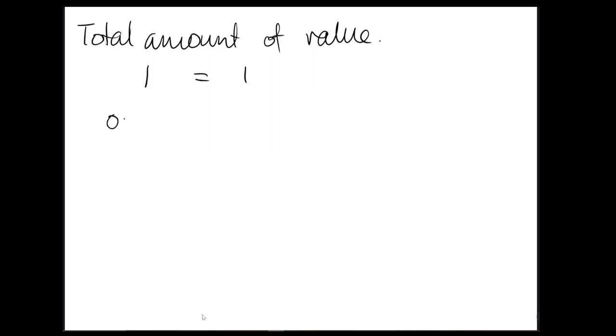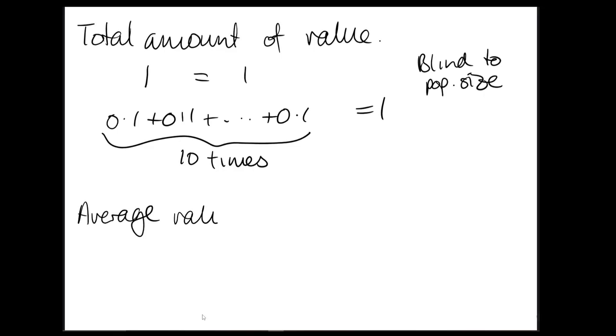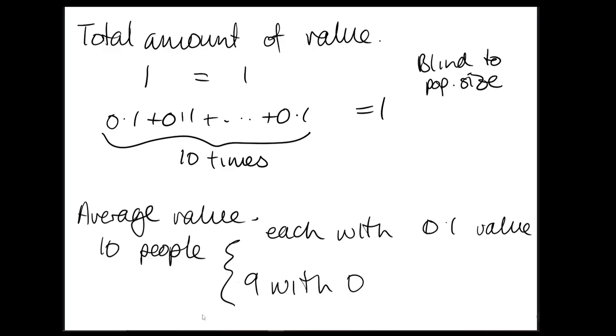So one is one, right? But 0.1 plus 0.1 plus 0.1 ten times is also one. So this kind of is blind to population size. The other typical metric is averaging the value across a population. This has its own problems because it does not account for the distribution of value. So a population of ten people, so in the first case we have each with 0.1 value, would be the same as 9 with 0 value and 1 with value 1, because these would both have average value equal to 0.1. What is the value in this case again? Sorry. Whatever it needs to be.